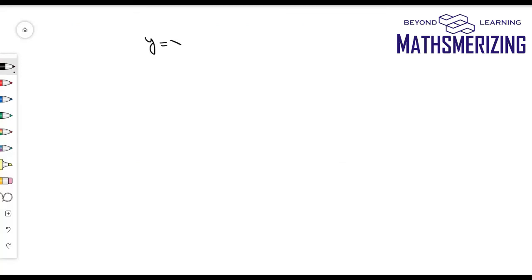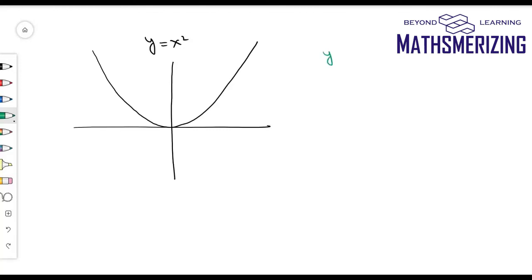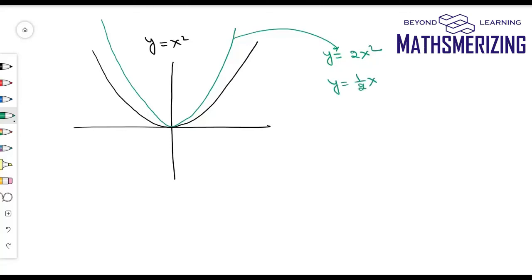From the graph of y equals x², I can draw y equals 2x² by stretching the graph upwards along the y-axis. For y equals (1/2)x², I need to shrink the graph along the y-axis. So from y equals x², for 2x² I stretch the graph, and for (1/2)x² I shrink the graph.